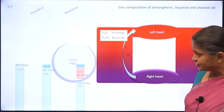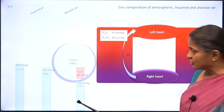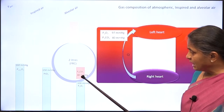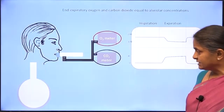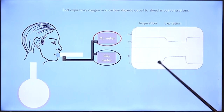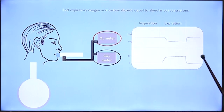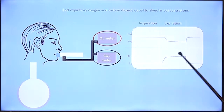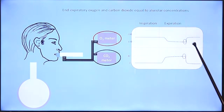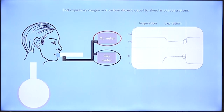Now let us set aside nitrogen and water vapor pressures and concentrate only on oxygen and carbon dioxide partial pressures. There is minimal carbon dioxide in inspired air. The alveolar carbon dioxide and oxygen partial pressures are estimated with the help of oxygen and carbon dioxide meters. We have seen the changes in oxygen and carbon dioxide concentrations as measured by the meters during inspiration and expiration. At end expiration, when alveolar air comes out, the partial pressures of oxygen and carbon dioxide reflect what would exist in the alveolus. This is how we measure alveolar gas concentrations — end-expiratory oxygen and end-expiratory carbon dioxide reflect alveolar gas concentrations.